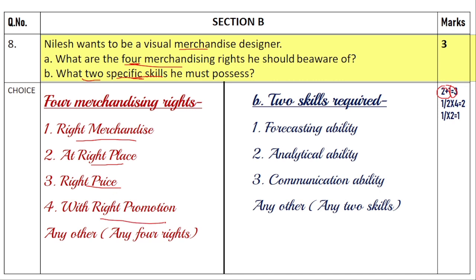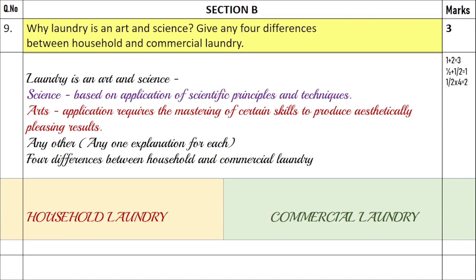There were six R's in total — you can write down the other two merchandising rights in the comment box. The two specific skills he should possess include forecasting skills, analytical skills, and communication skills. You can write other skills as well, such as interest in designing or being creative. It is not necessary to write down the exact same ones.